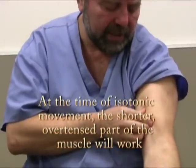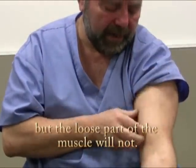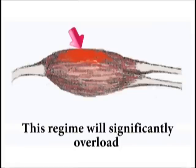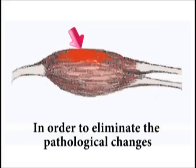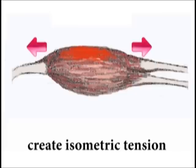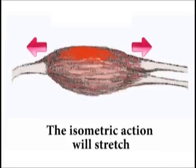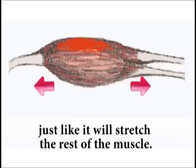At the time of isotonic movement, the shorter over-tensed part of the muscle will work, but the loose part of the muscle will not. This regime will significantly overload the pathologically changed part of the muscle. In order to eliminate the pathological changes within the muscle, we must apply isometric action and post-isometric relaxation techniques. The isometric action will stretch the pathologically shortened part of the muscle, just like it will stretch the rest of the muscle.